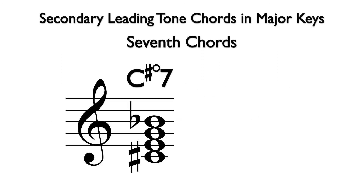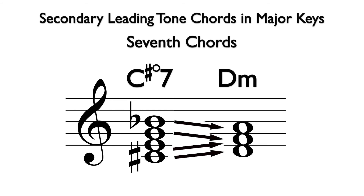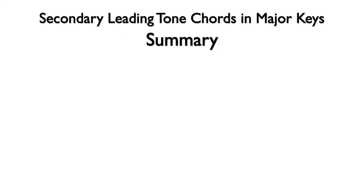Fully diminished seventh chords are strong chords with two interlocking tritone intervals. These tritones want to resolve inward in the following manner. It is not uncommon for composers to use fully diminished seventh chords to lead to major chords as well as minor chords.